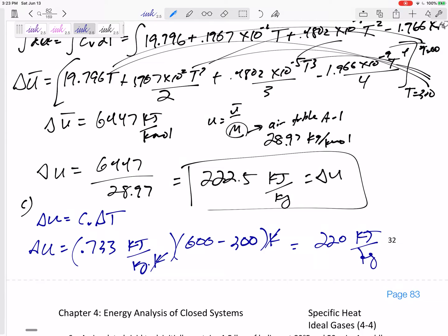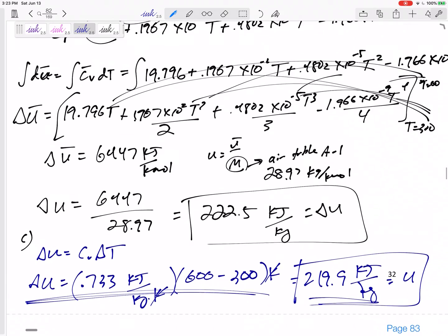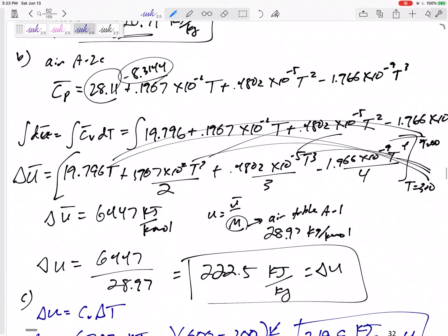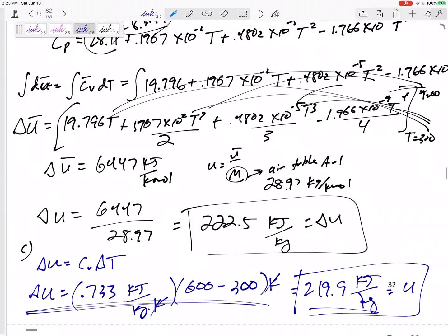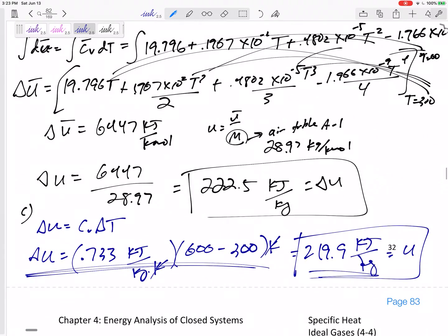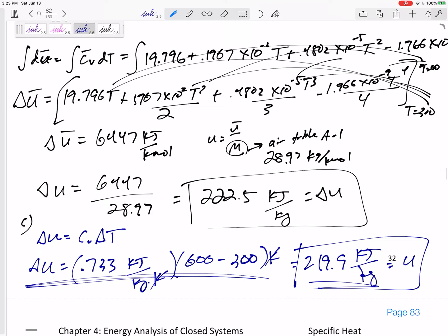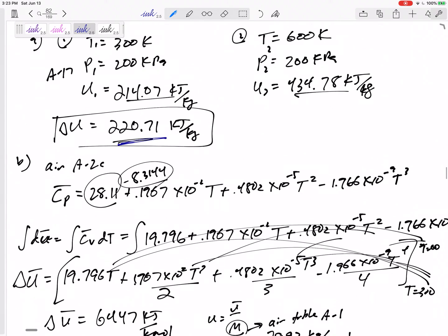I believe that's what I got. 0.733 times 300. Let's say 219.9 kilojoules per kilogram, that is my U. Look how much faster and easier that was. And I mean, usually it's less accurate, but this one actually looks more accurate, looks closer to the property table values. So now that we did part B.